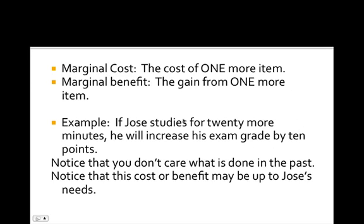Now, we don't care what he did an hour before this, we care about adding that additional 20 minutes. So the cost or benefit may be up to Jose's needs. If he has a 95 in the class, this benefit of 10 points isn't going to affect his average very much, may not be worth it. If he has a 65 in the class, this is definitely something that he should do. You should take actions where the marginal cost and marginal benefit are equal or the benefit is better. And we'll look at that a little bit more in personal finance.